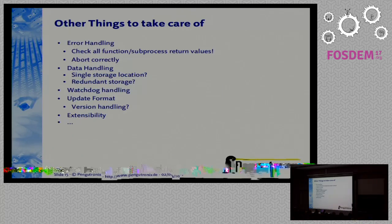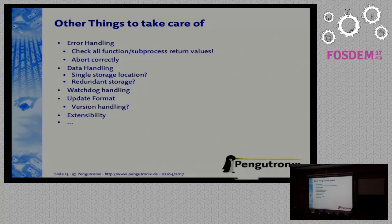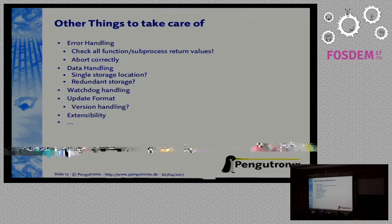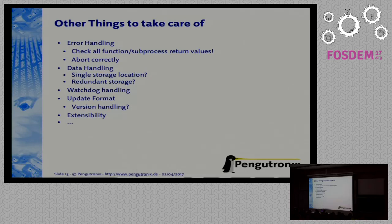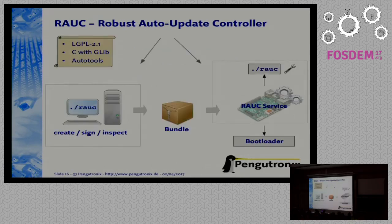There are a lot of other things you have to take care of. You need good error handling to ensure nothing in the update process failed. You have to think about where to store your data — in a single partition or a redundant partition. This matters for fallback or data migration if system A and B use slightly different data formats. And there is watchdog handling and much more. As a conclusion: updating is not that easy, and this is why we developed RAUC, the update tool in firmware.